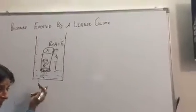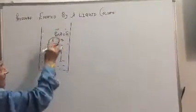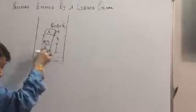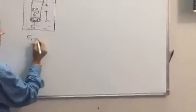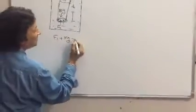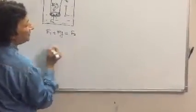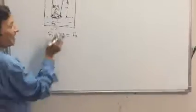So F2 is the force acting upward, while weight is acting downward. Students, F1 plus Mg must be equal to F2.